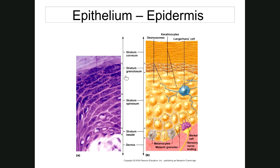The next layer up is the stratum granulosum, meaning the granular layer. Looking at these cells, they appear to have a lot of granules. Three to five rows of cells — these cells no longer divide but instead begin producing keratohyalin, which will be converted into keratin, the waterproofing and toughening protein. 'Keras' means horn or tough — a water-resistant protein that is deposited in the cells as they begin to die, to waterproof and toughen them so you have a friction-resistant surface.